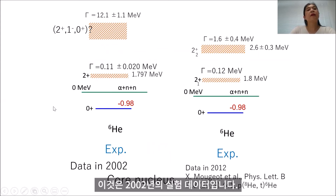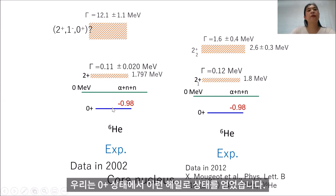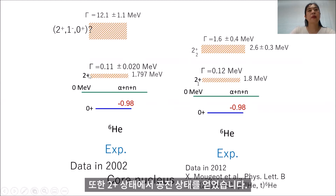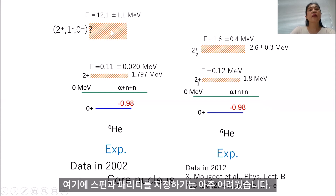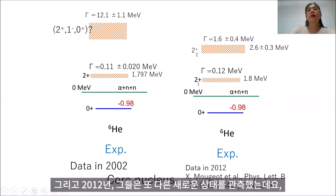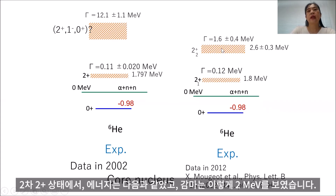This is the experimental data from 2002. We have the bound ground state of the 0+ state, and also a resonant state of the 2+ state. Above this 2+ state, they also reported a very broad resonant state, but it was difficult to assign the spin and parity. Then in 2012, they observed another new state — a second 2+ state — with the energy and a decay width gamma of about 2 MeV.